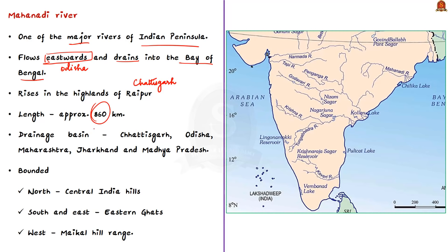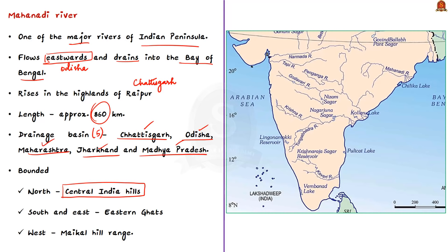The river's length is about 860 kilometers and its drainage basin is shared by five states: Maharashtra, Chhattisgarh, Madhya Pradesh, Jharkhand, and Odisha. The river is bounded by the Central India hills in the north, the Eastern Ghats in the south and east, and the Maikala hill range in the west.